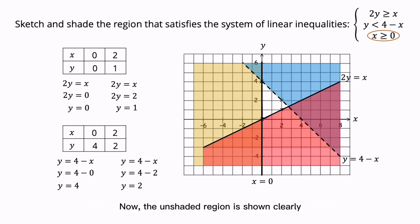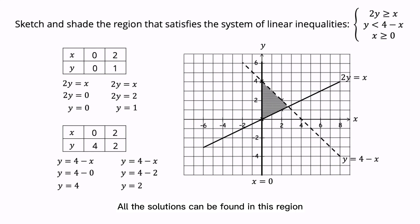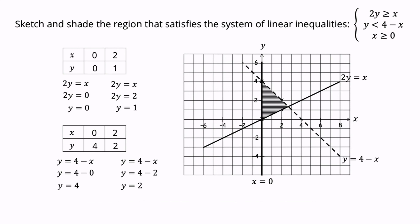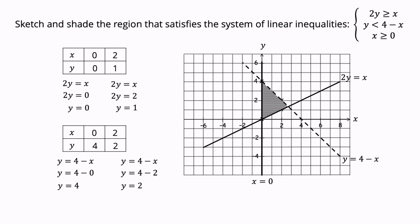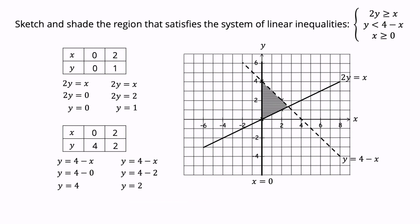Now the unshaded region is shown clearly — that is the solution set for the three linear inequalities. All the solutions can be found in this region. Take note that if we are asked to find the shaded region for a system with more than two linear inequalities, we shade the unsatisfied region of each linear inequality. Then the solution will be clearly seen. That's all. Thanks and see you.